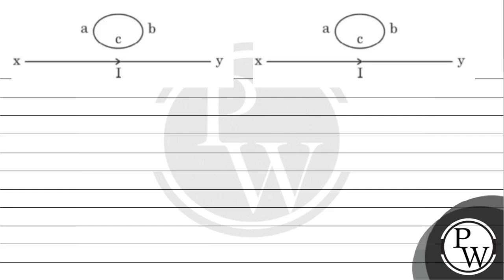If we use the left hand thumb rule, so if this is the direction of the current, we will actually get the direction of the magnetic field.